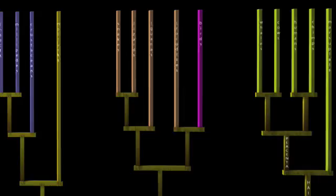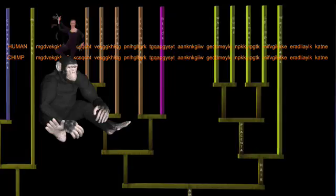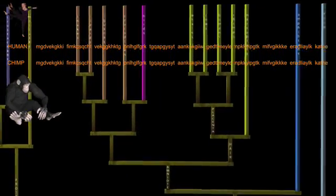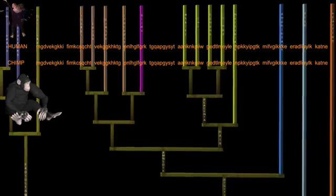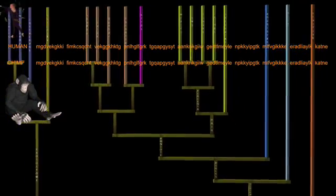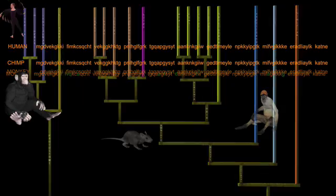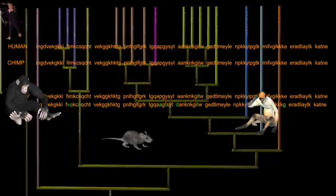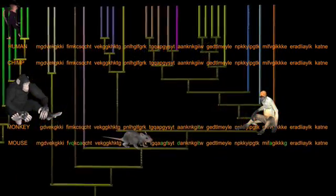For example, humans and chimps have exactly the same amino acid sequence for this protein. It hasn't mutated in the six or seven million years since our lines separated. And our common gene is at most ten amino acids different from all other mammals, confirming our close relationship with other mammals.